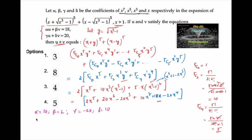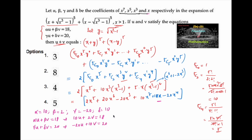Substituting into the given equations: αu + βv = 18 gives 10u + 2v = 18, and γu + δv = 20 gives -20u + 10v = 20. Simplifying: 5u + v = 9 and -2u + v = 2.